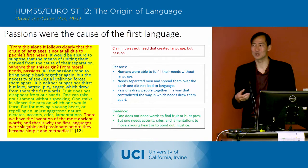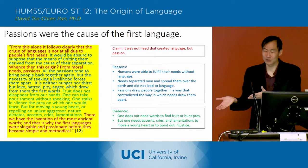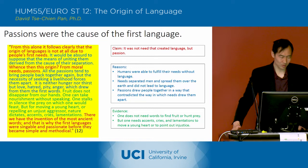His evidence is always these thought experiments. He says one doesn't need words to find fruit or to hunt down your prey, but one does need accents, cries, and lamentations in order to move a young heart or to point out injustice.